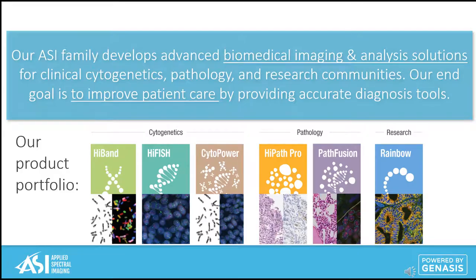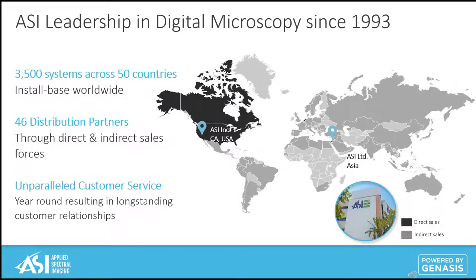For those just learning about our company, the ASI family develops advanced biomedical imaging and analysis solutions for clinical cytogenetics, pathology, and research communities. Our end goal is to improve patient care by providing accurate diagnosis tools. ASI has been a global leader in digital microscopy since 1993, with headquarters in Asia and the United States. Globally, we have installed over 3,500 systems across 50 countries, utilizing direct sales in North America and 46 distribution partners for the rest of the world. ASI is proud to offer nearly 24/7 year-round customer service, which has resulted in longstanding customer relationships.